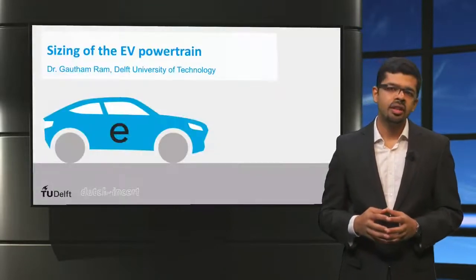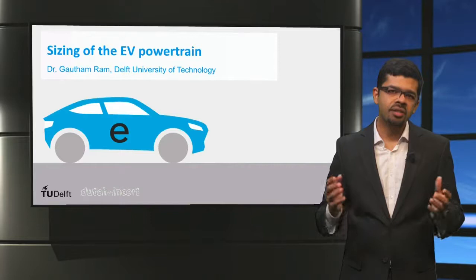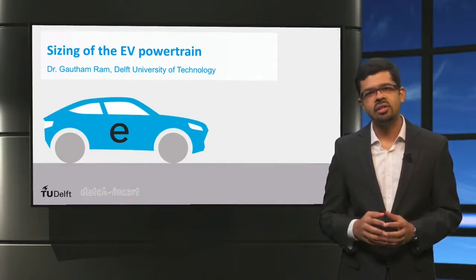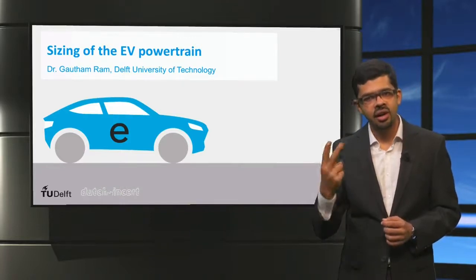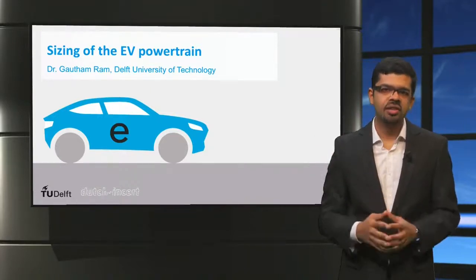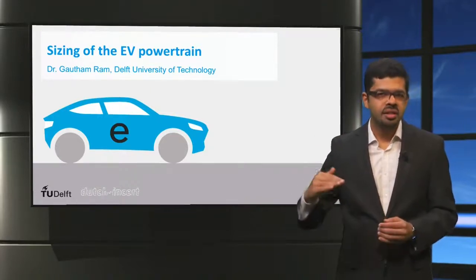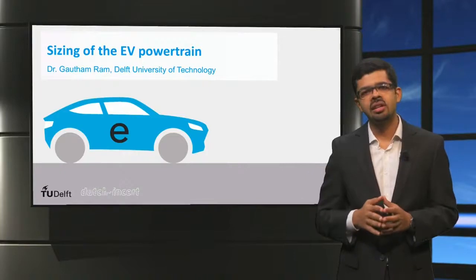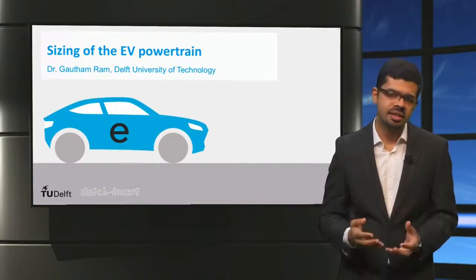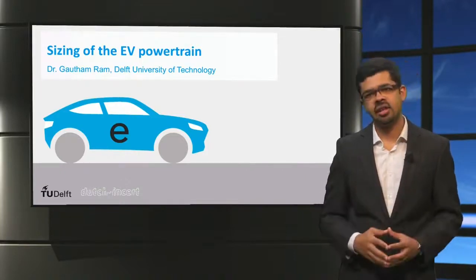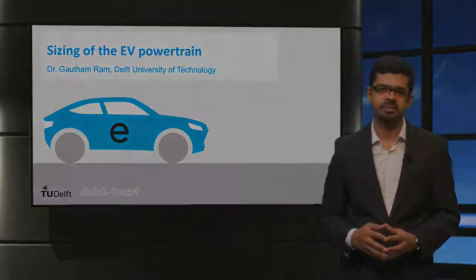To conclude, the forces acting on a vehicle when driving consist of the rolling resistance force, the aerodynamic drag force, and the gradient force. The drivetrain provides the traction force, which can be controlled to change the vehicle acceleration and hence the vehicle speed. Thank you.